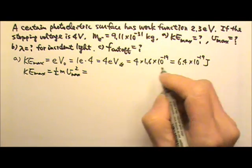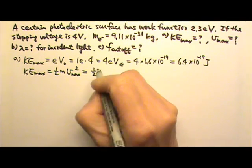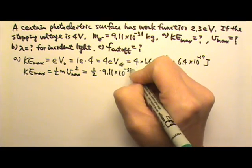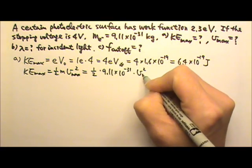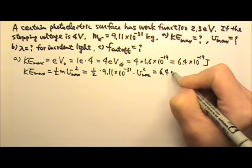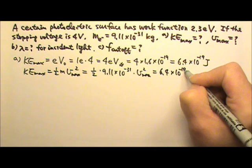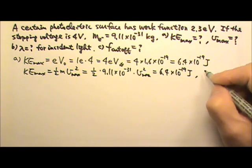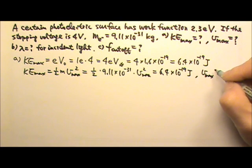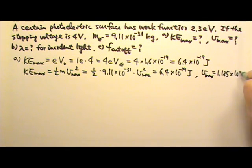Setting these equal: ½ × 9.11×10⁻³¹ × v² = 6.4×10⁻¹⁹ J. Solving for v, the maximum speed is 1.185×10⁶ m/s. That's the maximum speed.